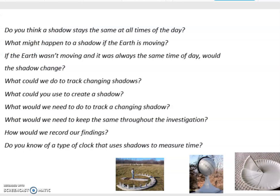These are your questions: Do you think shadows stay the same at all times of the day? What might happen to a shadow if the Earth is moving? If the Earth wasn't moving and it's always the same time of day, would the shadow change? What could we do to track changing shadows? What could you use to create a shadow? What would you need to do to track a changing shadow? What do we need to keep the same throughout the investigation? I'm sure in Year 4 you will have looked at scientific investigations — what changes and what stays the same.